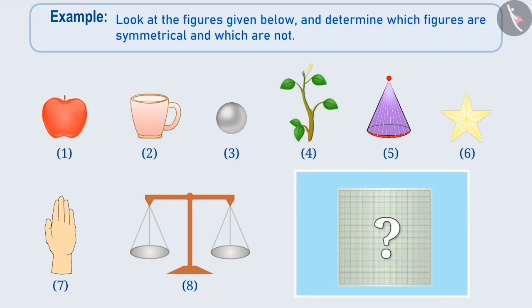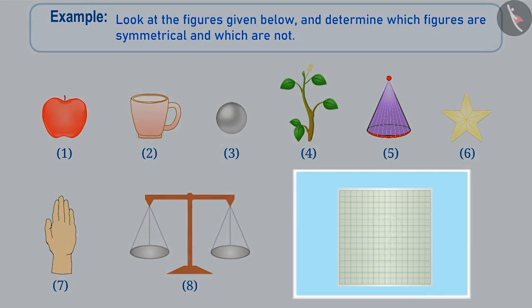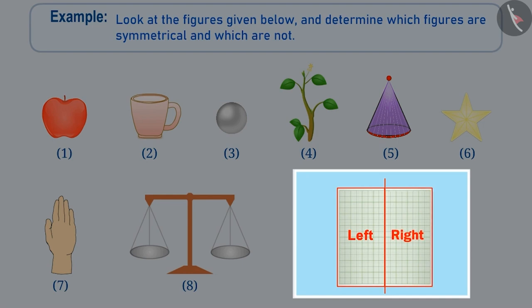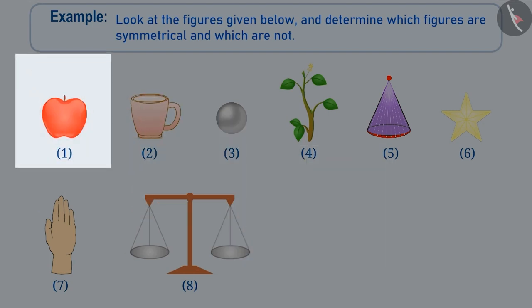To determine if a figure is symmetrical or not, we check that on folding the figure from the middle, the half on the left and the half on the right are completely identical to each other or not. That is, whether both the parts are like reflections of each other.